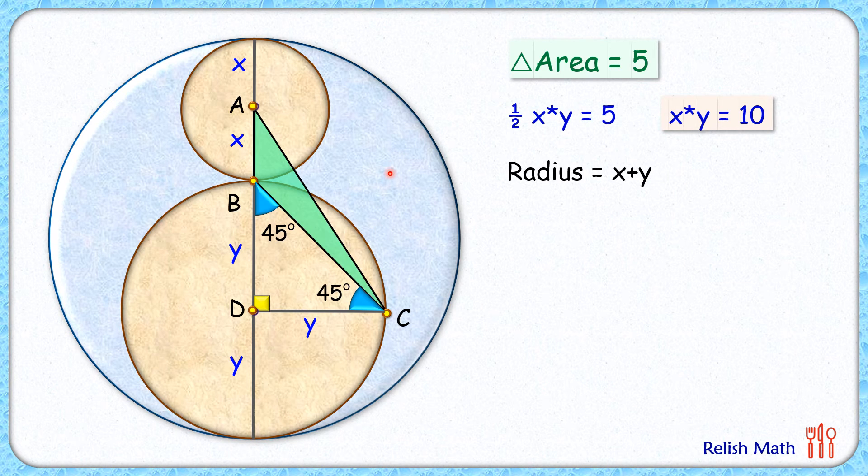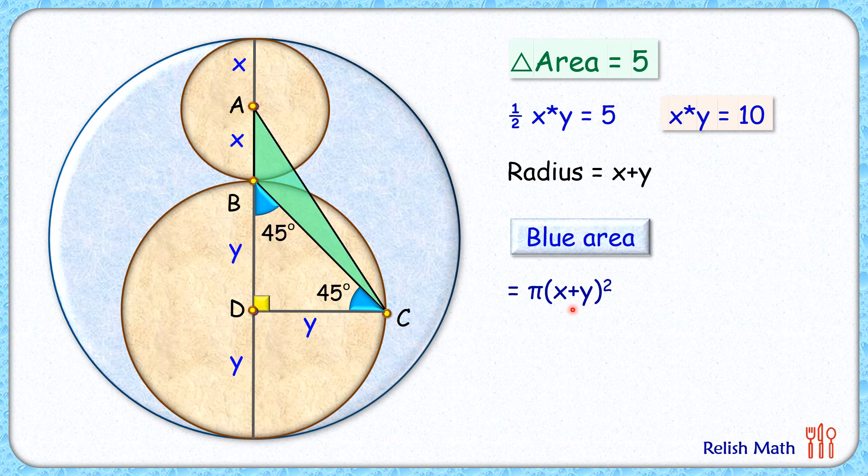Now let's check the area of this blue shaded region. So this blue shaded region will be the area of blue circle, that's pi times x plus y square, minus area of this small brown circle minus area of this bigger brown circle.